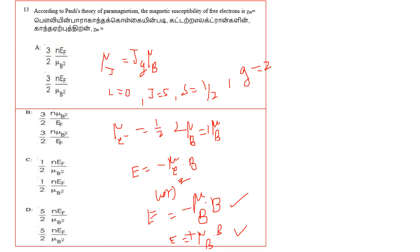So the Pauli paramagnetic susceptibility is chi equals 3/2 · n · mu_B² divided by E_F. Option B is the correct answer. This is the value of Pauli paramagnetism — the susceptibility of free electrons.